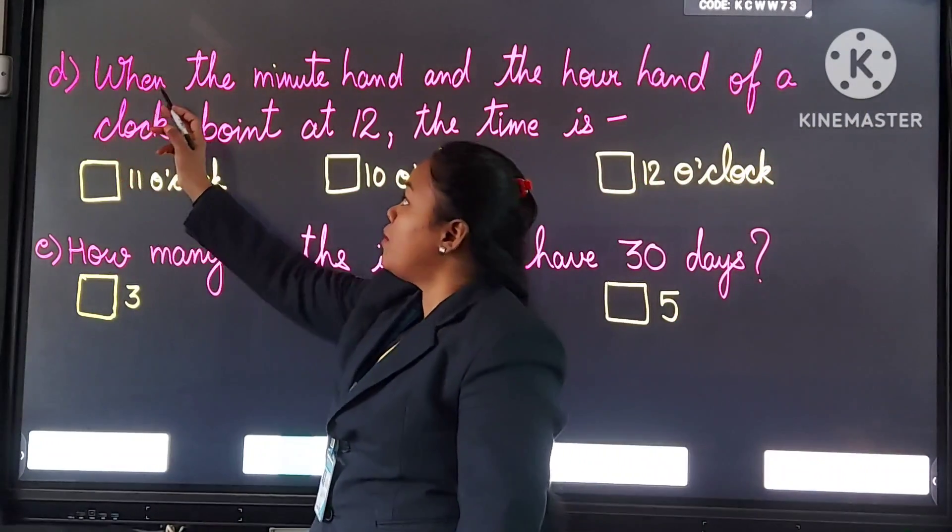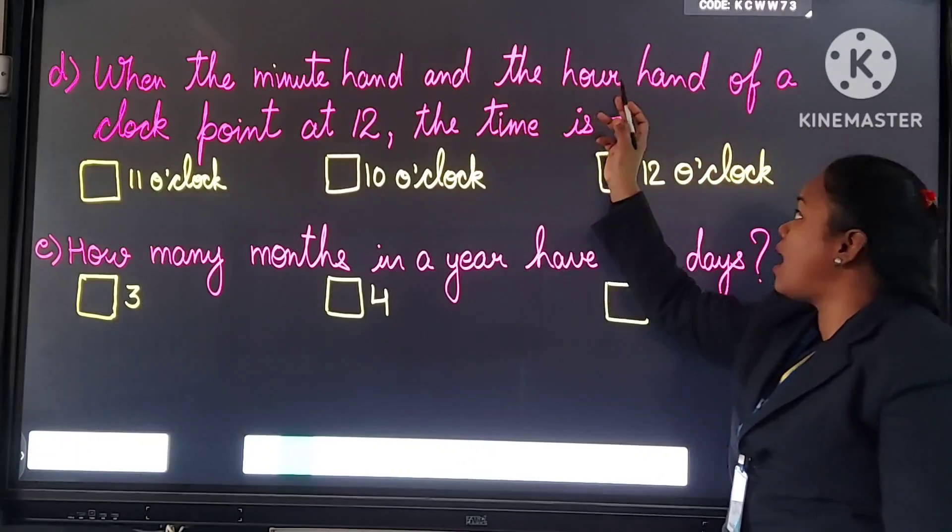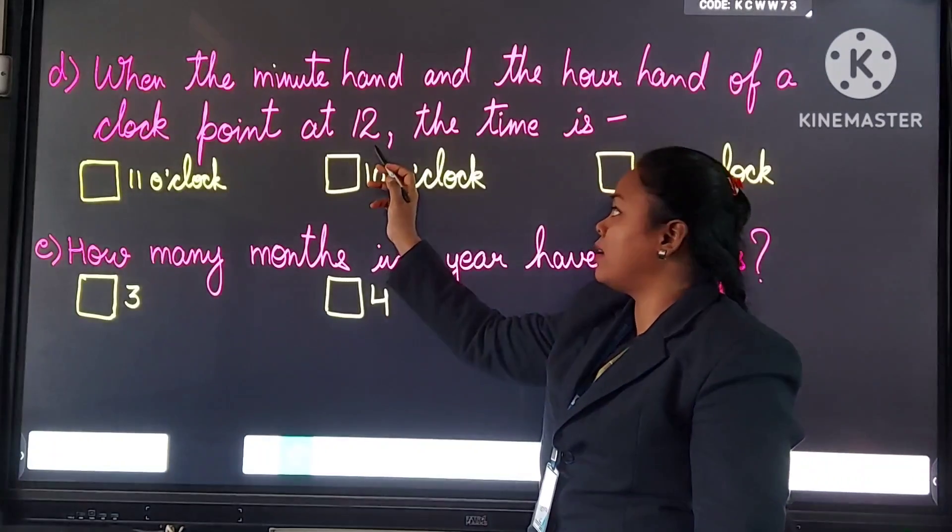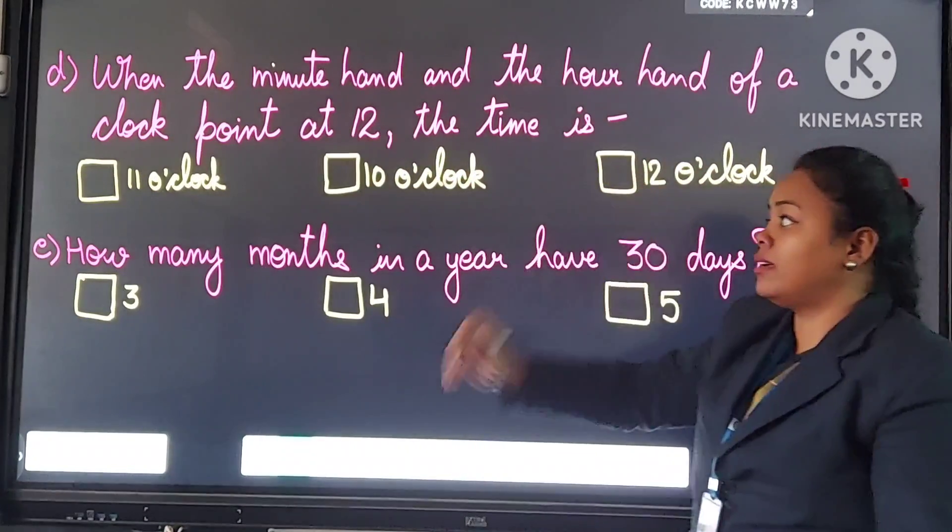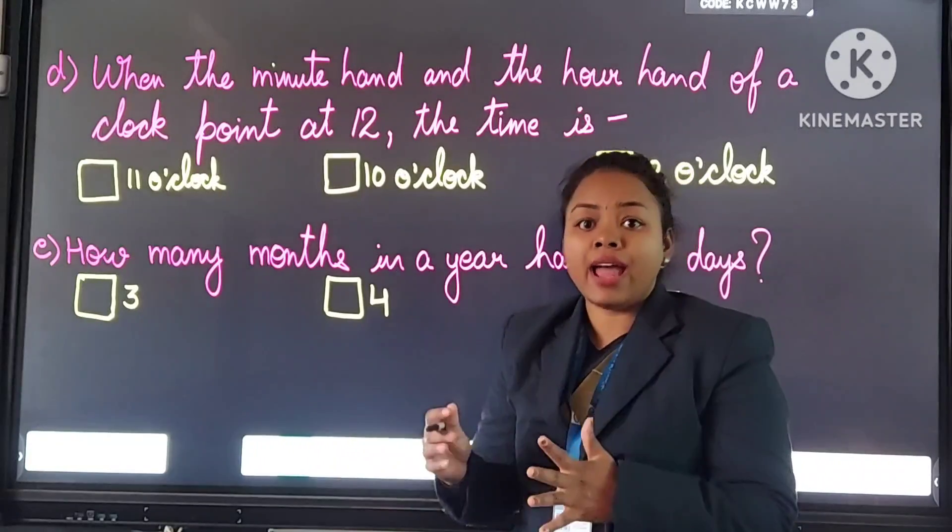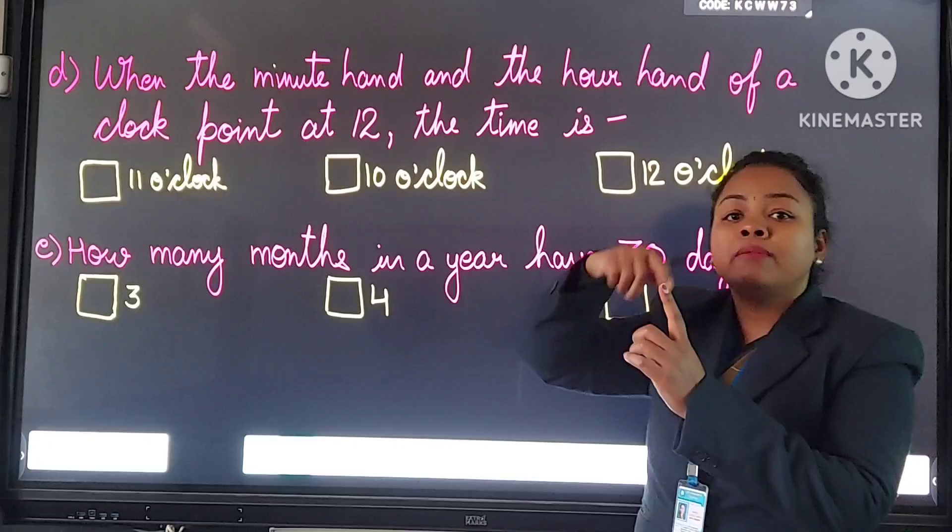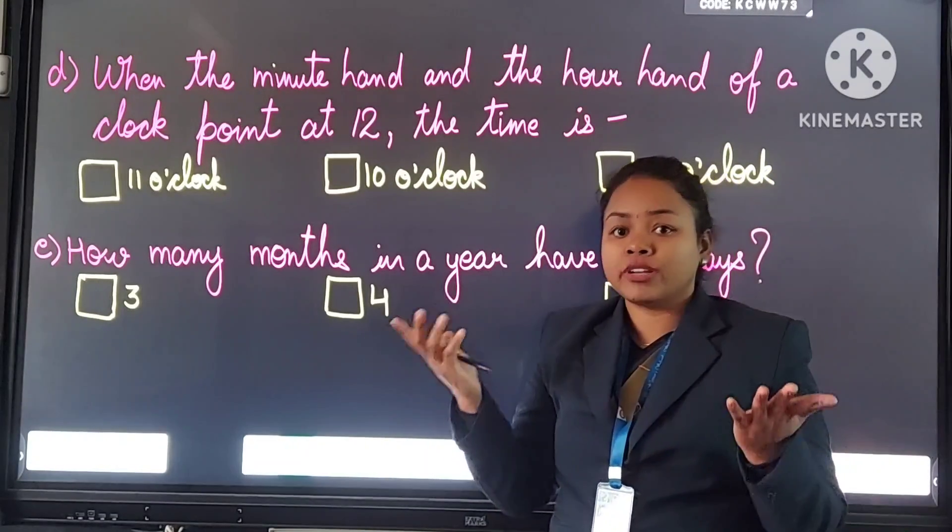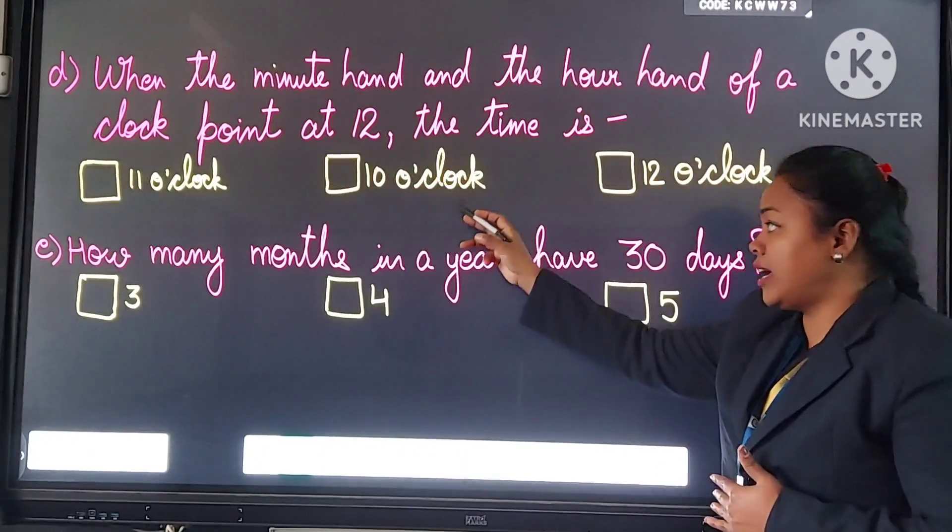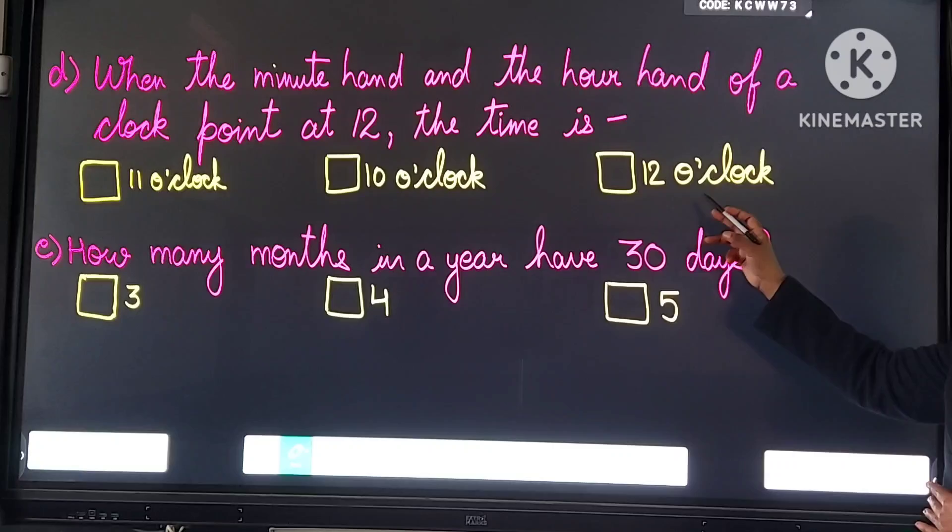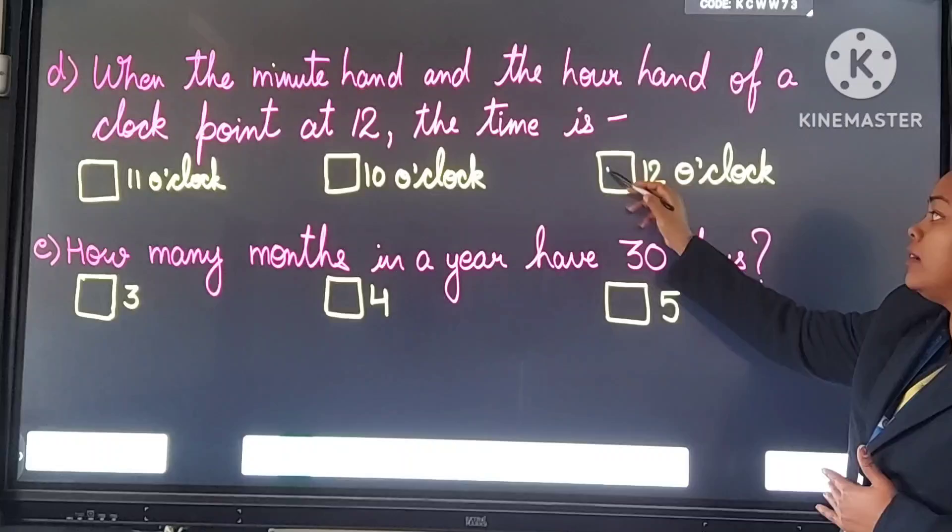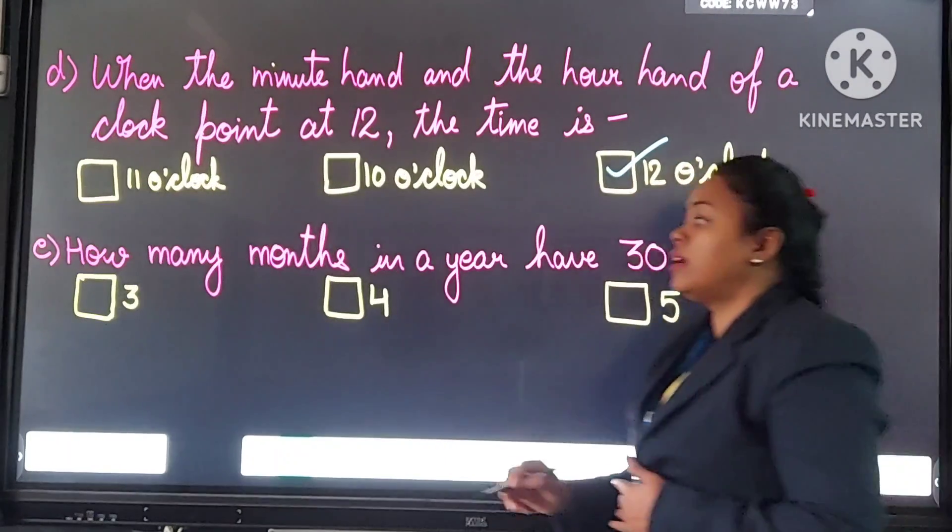Question number D. When the minute hand and the hour hand of a clock point at 12, the time is. Yaha bhi pooch raha hai, jab minute hand 12 pe rahega and also the hour hand bhi 12 pe rahega, then us ghaadi meh kitna baj raha hoga? Options are 11 o'clock, 10 o'clock, 12 o'clock. Answer is 12 o'clock. You will tick here, 12 o'clock.